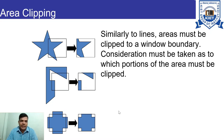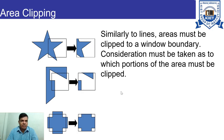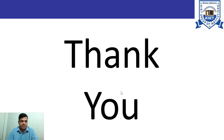Finally, we have area clipping. Similarly to lines, areas must be clipped to a window boundary, and we must consider which portions of the area must be clipped. The portion coming inside the window is kept for display and is visible, while the rest of the portion is not visible. In this way we can perform area clipping. Thank you.